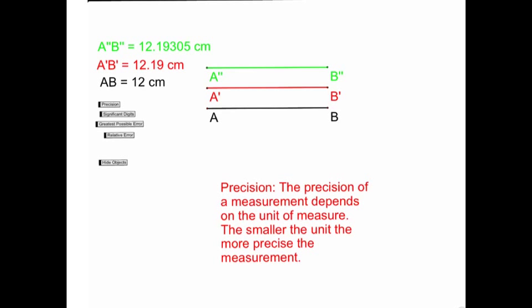Let's take a look at an example of this. What we have here are three lines, and each of those lines are congruent. However, each has been measured using a different precision of measurement.